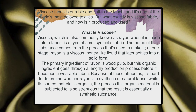Viscose fabric is durable, soft to touch, and it's one of the world's most beloved textiles. But what exactly is viscose fabric and how is it produced and used? Viscose, which is also commonly known as rayon when it's made into a fabric, is a type of semi-synthetic fabric.